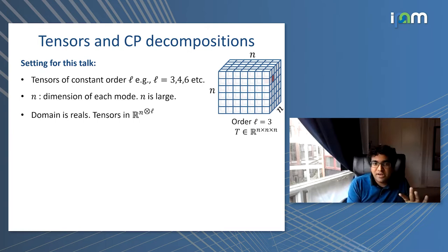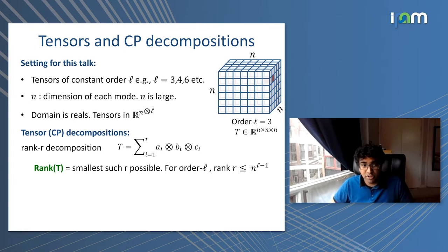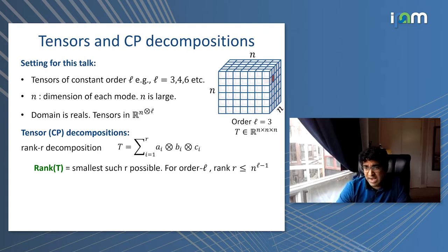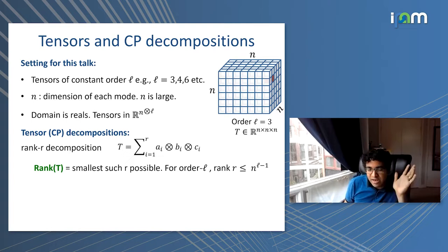For example, an N×N×N tensor is what you get when order L equals 3. In this talk, I'll be mainly focusing on CP decompositions of tensors. We'll say a tensor has a rank R decomposition if it can be written as a sum of R rank-1 tensors, and the rank of the tensor is the smallest such R. For order-L tensors where all dimensions are N, the rank can go up to N to the L minus 1.